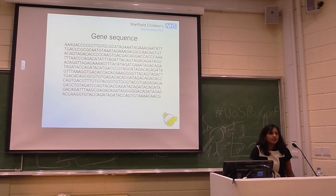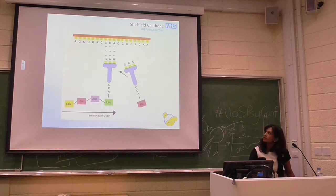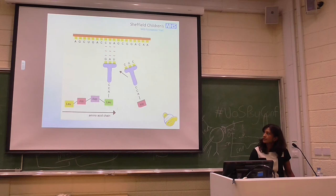The gene sequence is read three bases at a time — for example, AAA, AGA, CCC, and so on. Each set of three bases encodes for a specific amino acid. The DNA code encodes for a specific RNA, which then encodes for a specific protein. These amino acids link up together to form the amino acid chain, which ultimately forms the protein, and that has a specific function in the body.